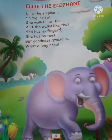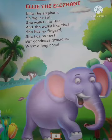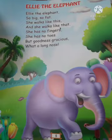She has no fingers, she has no toes. Fingers beta, joh aapke hands mein hoti hai, and toes joh humare pair mein hoti hai — pair ki fingers ko hum toes bolte hai, aur hand ki fingers ko hum fingers bolte hai. So she has no fingers, she has no toes — elephant ke na to fingers hoti hai, na toes hoti hai. Uski ungliyan nahi hoti, na haath mein, na pair mein.